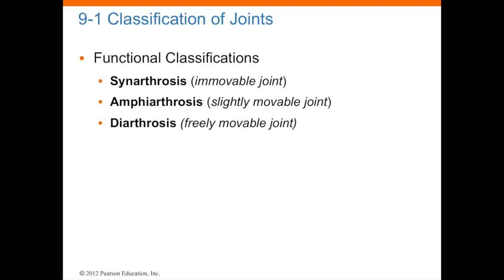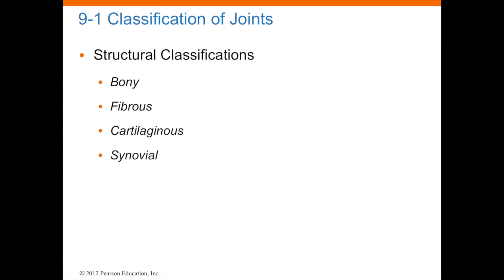Functional classifications are: synarthrosis, which is immovable joints — these joints don't really have any motion. Amphiarthrosis means slightly movable joint, a little bit of movement. Diarthrosis is a freely movable joint, completely moving. Structural classifications are based on four things: bone, fibrous tissue, cartilaginous tissue, and synovial tissue.